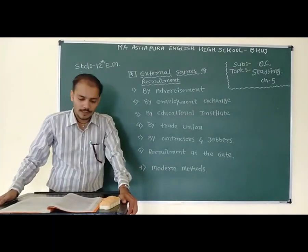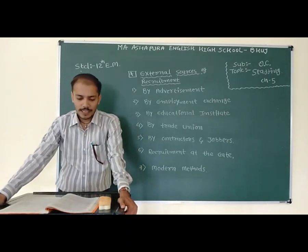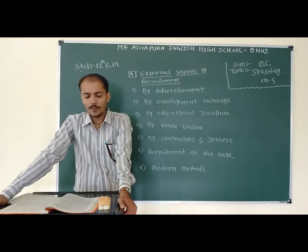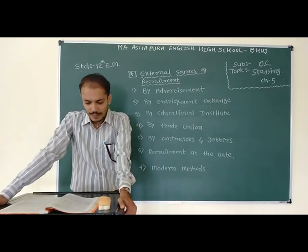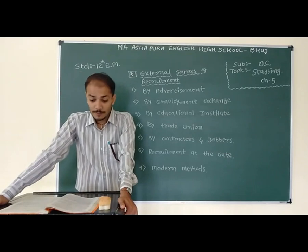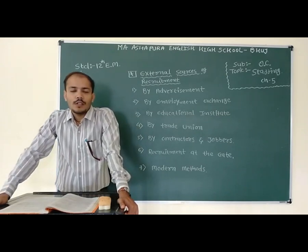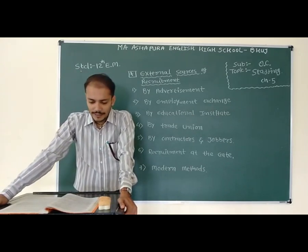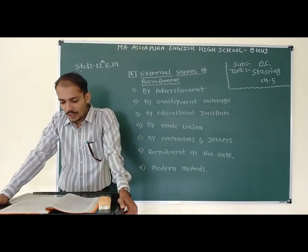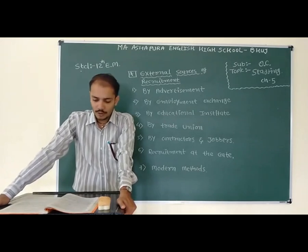Fifth point is by contractor and jobbers. In this system, a contract is made between the business enterprise and contractor for supply of workers. Contractor kiya jata hai, contractor ke beech mein, ki woh workers ko supply kare aur usme se commission aage le. Contractor takes the responsibility of arranging work of labourers. The contractor is concerned with various types of labour; woh various types ke labour provide karega, aisi guarantee ke saath contract karta hai. This often happens with workers of construction industries, mining industries, tea plantations.